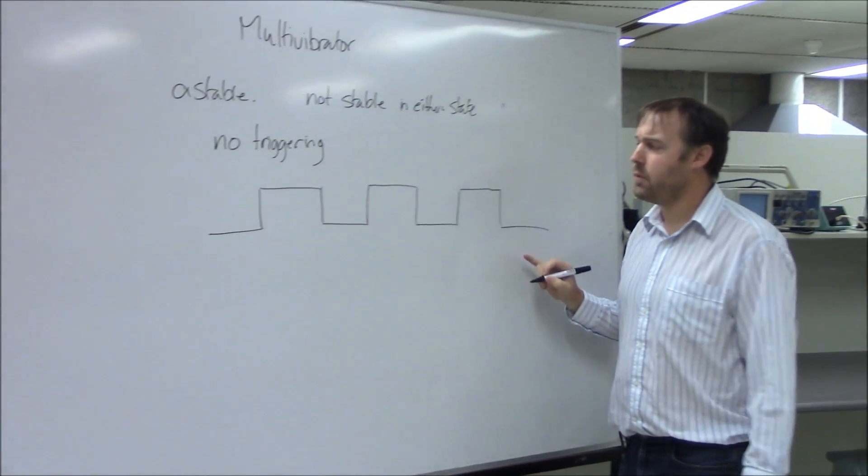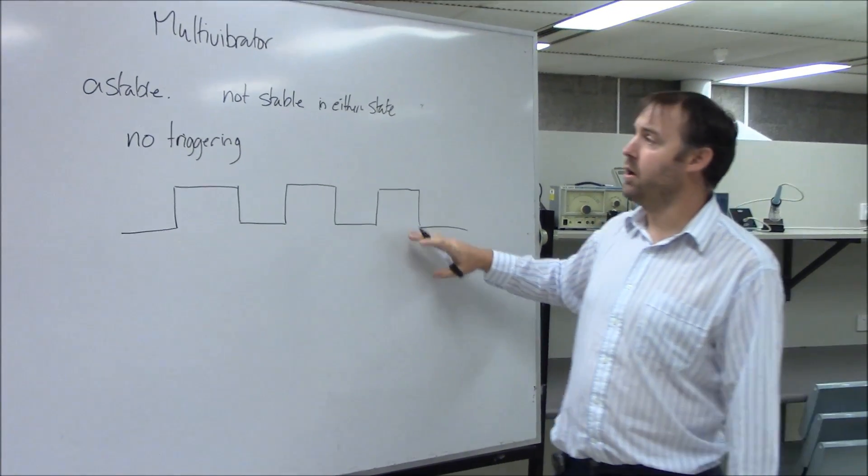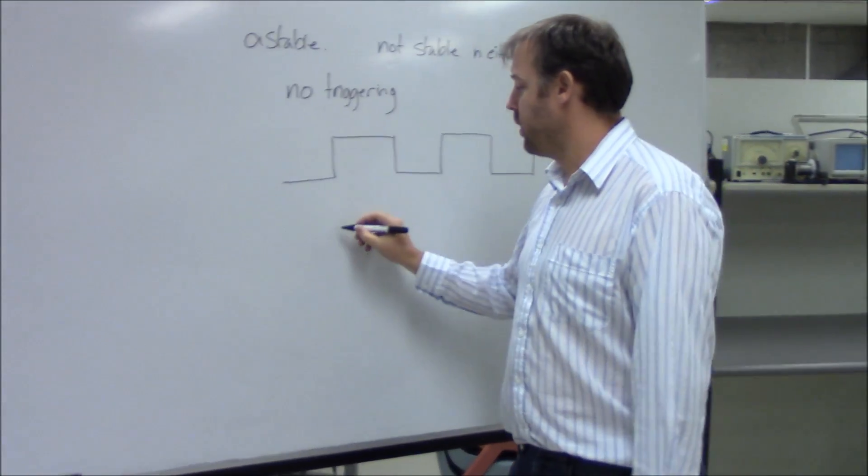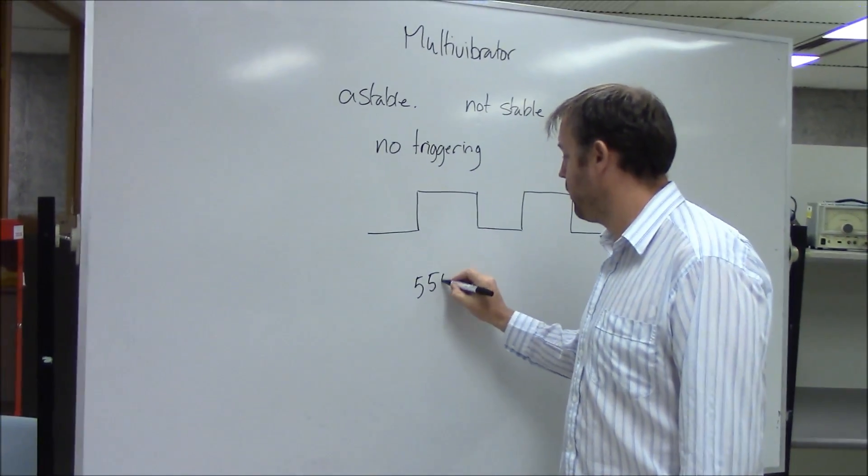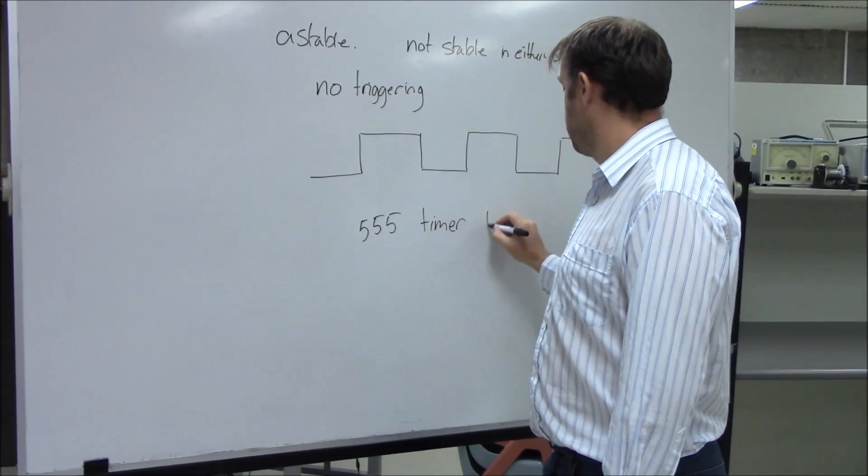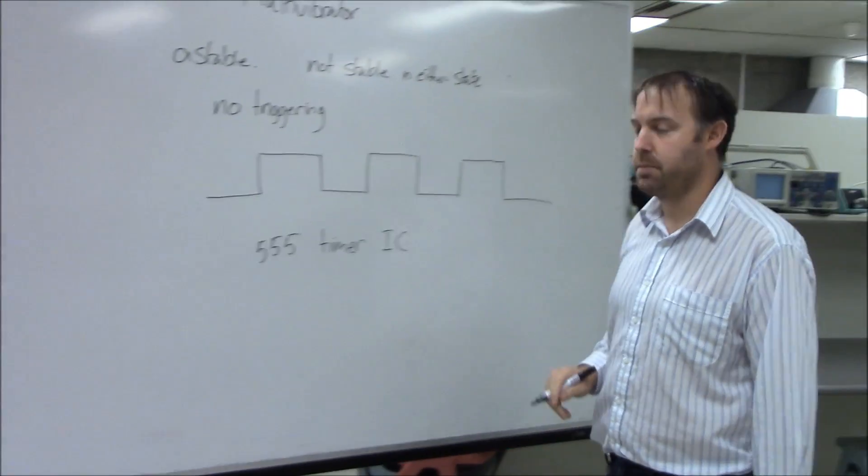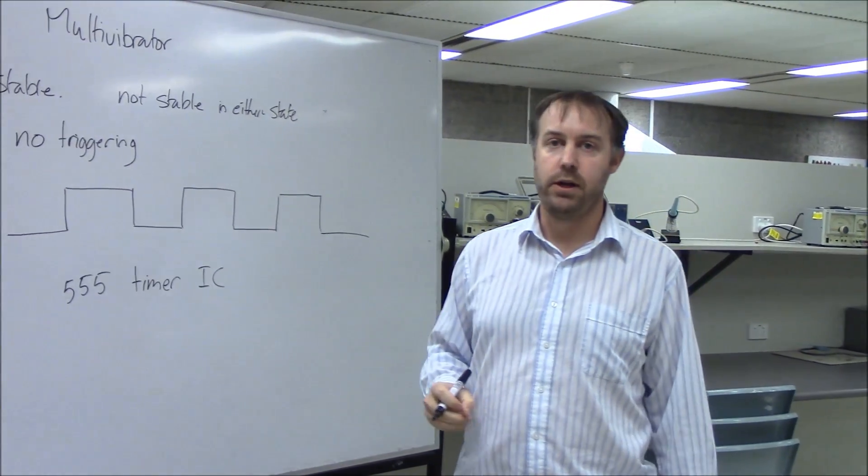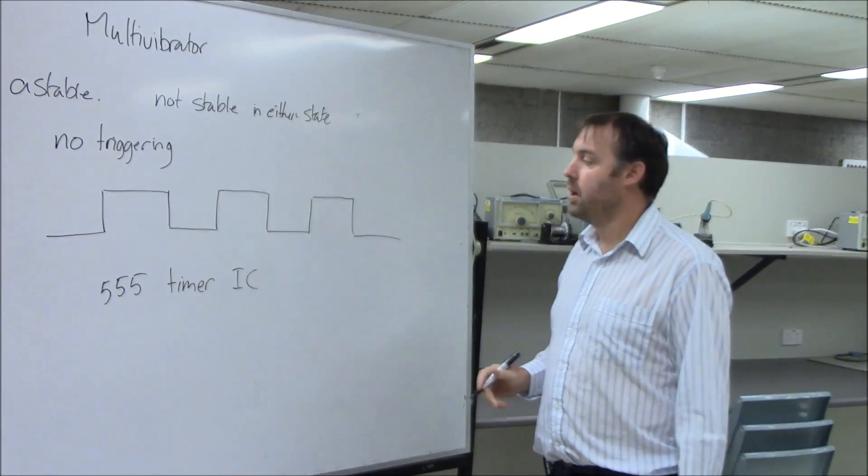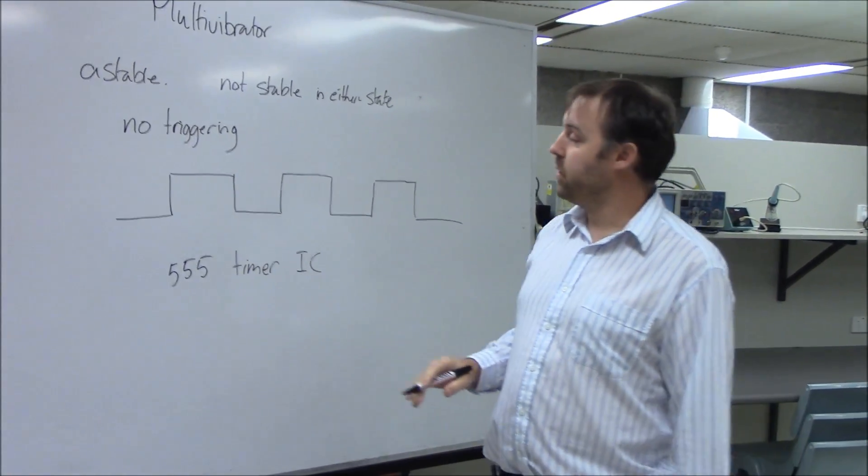There are many different ways that we can create an astable. One of the famous ones is the 555 timer circuit. It's a package which if you configure it a certain way it can be either a monostable or an astable, and I think you can make a bistable with them.